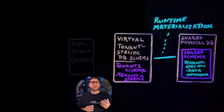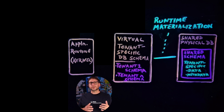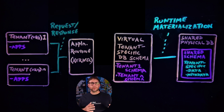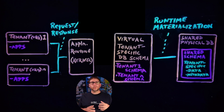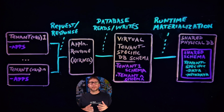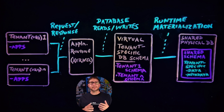There's also a multi-tenant kernel, which is commonly referred to as the application runtime. The kernel receives requests from the various tenants and sends responses back to them. When the kernel receives a request, it reads the metadata and data from the virtual schemas to dynamically provide tenant-specific applications, business logic, and APIs at runtime.